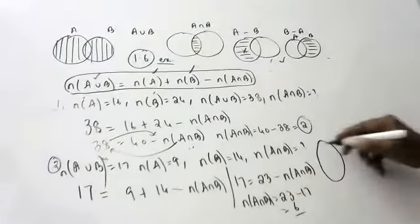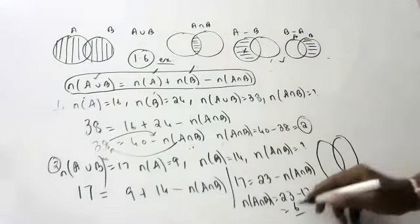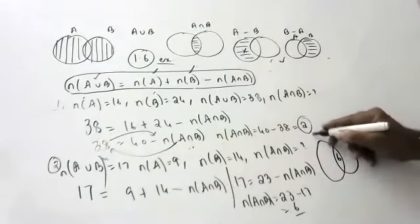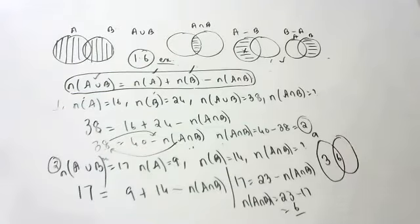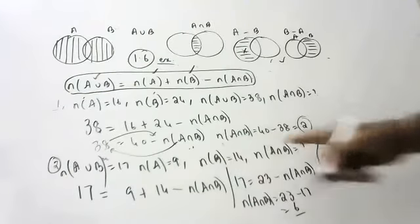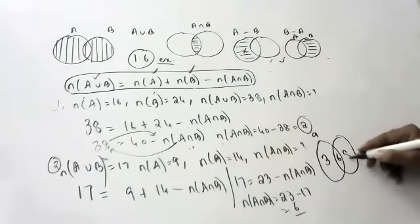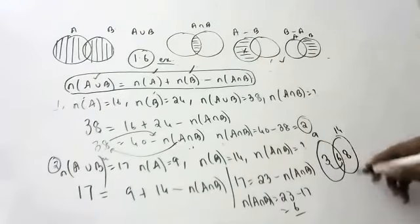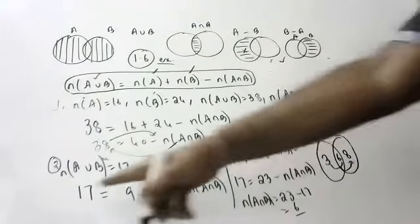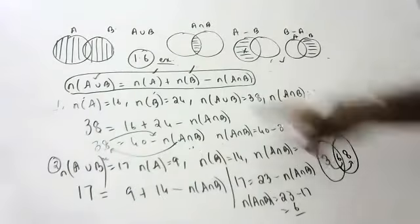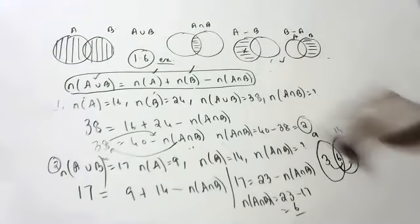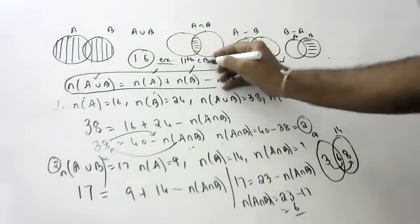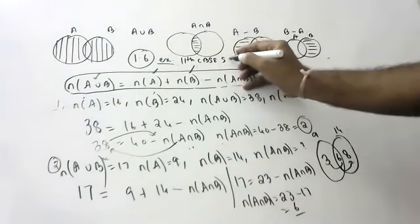If you want, I will show with a Venn diagram. Common elements are 6. N(A) is 9, so only-A is 9 minus 6 equals 3. N(B) is 14, so only-B is 14 minus 6 equals 8. So 3 plus 6 plus 8 is 17 — A∪B is 17. This is the standard formula from Exercise 1.6 for 11th class.